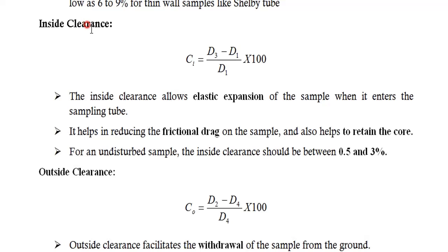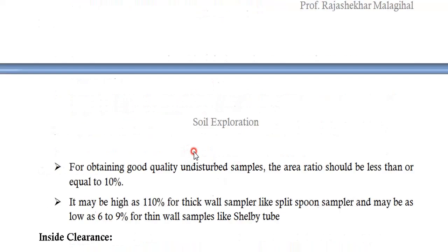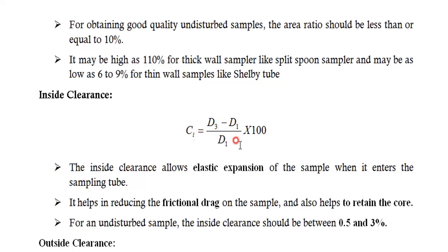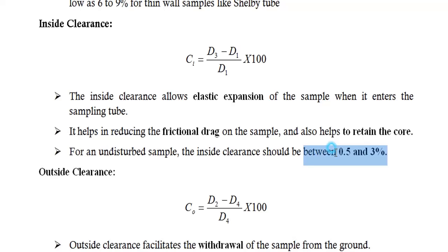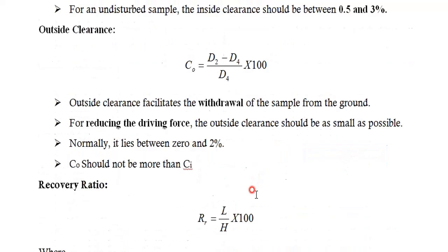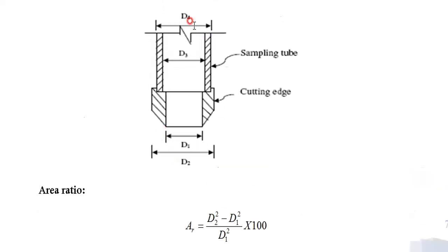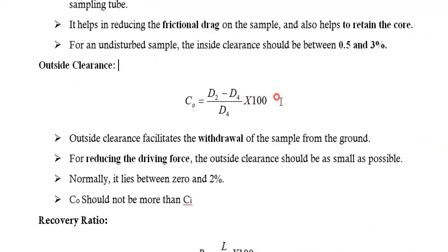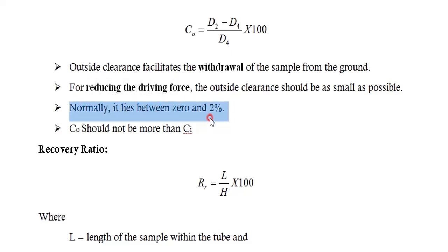Inside clearance (Ci) = (D3 − D1) / D1 × 100. This clearance is given because when soil penetrates inside the cutting edge it is contracted, and when it enters the sampling tube it expands — we allow the soil to expand. To get an undisturbed soil sample, inside clearance should be between 0.5% and 3%. Outside clearance (Co) compares D2 and D4: it is (D2 − D4) / D4 × 100. To get an undisturbed soil sample, outside clearance normally lies between 0% and 2%.